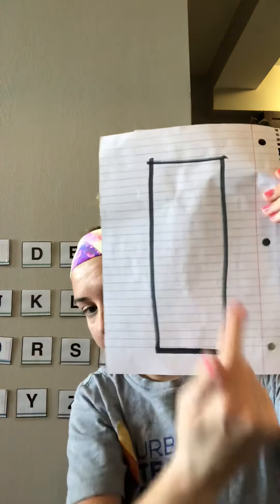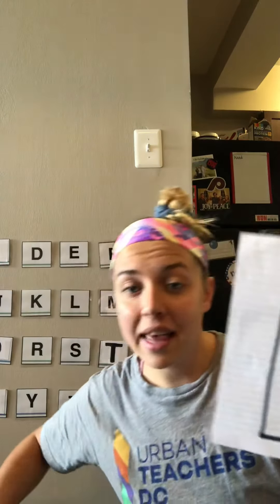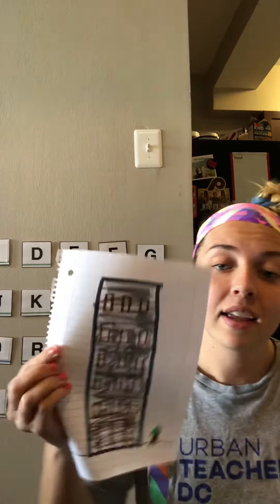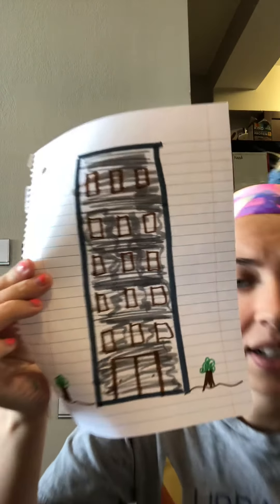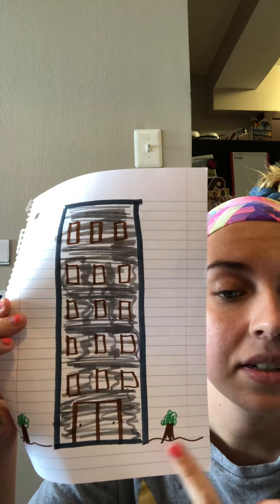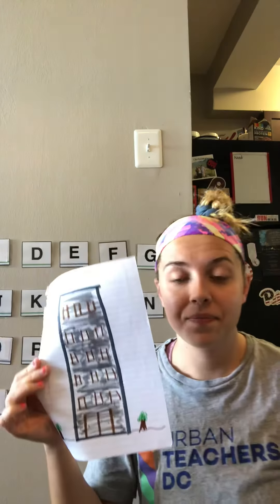For my rectangle, I turned that into an apartment building. The apartment building that I live in kind of looks like a rectangle — it is tall, like a rectangle. And then I added some windows, some doors, and some trees outside. I saw my rectangle and I thought, I want to turn it into an apartment.